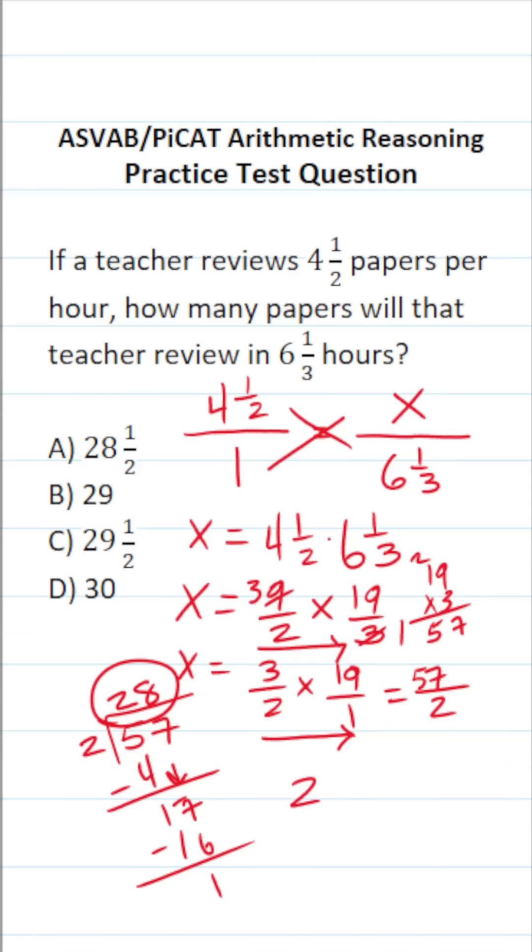This 28 is going to be our whole number. This remainder of one is going to be our numerator. And this two is going to be our denominator. So in other words, this teacher can review 28 and one half papers over six and one third hours. So this one is going to be A.